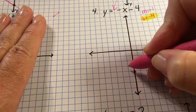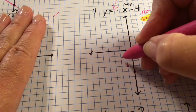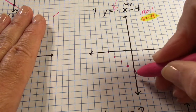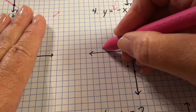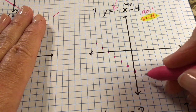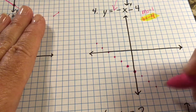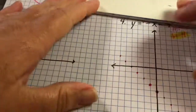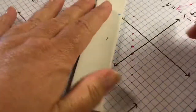From the y-intercept at negative four, slope is negative one: rise one, run one to the left — rise one, run one to the left. I had a teacher who said 'up and over, up and over' to remember slope, or you can go down and to the right. Then I'll grab my straight edge and connect those dots.